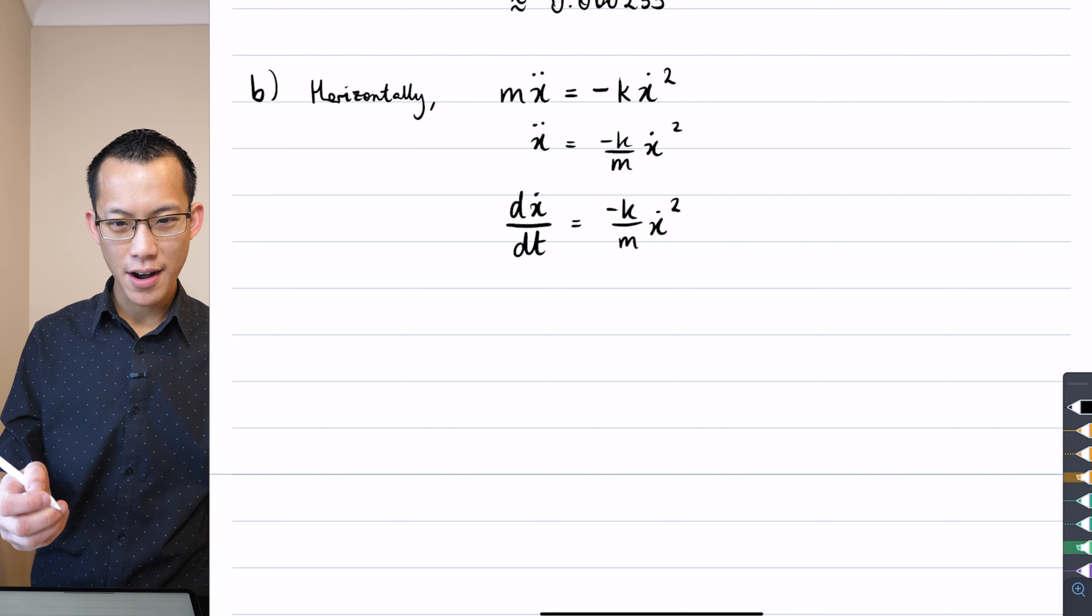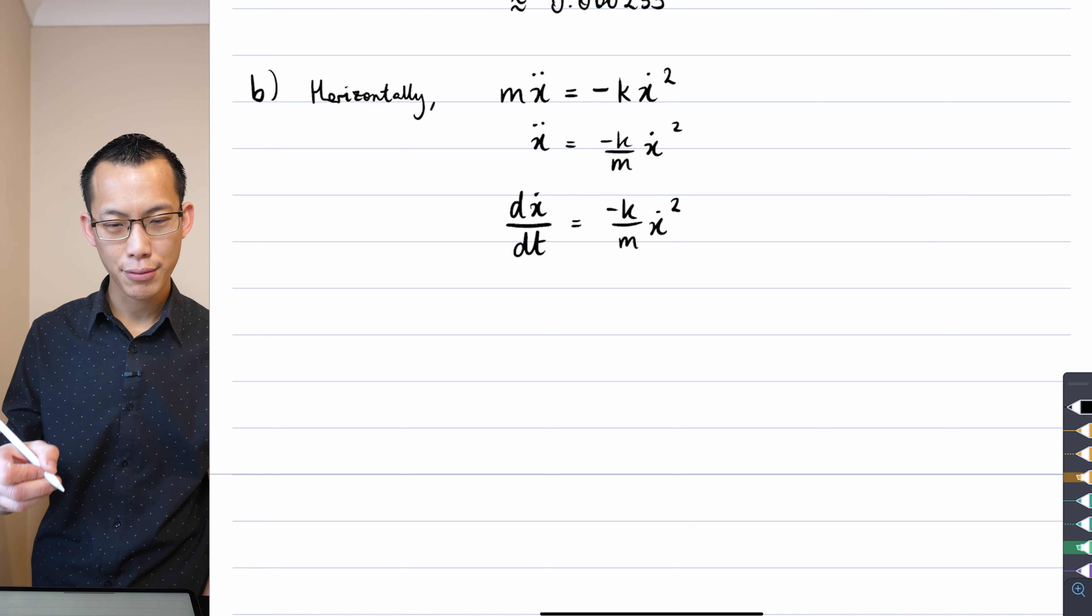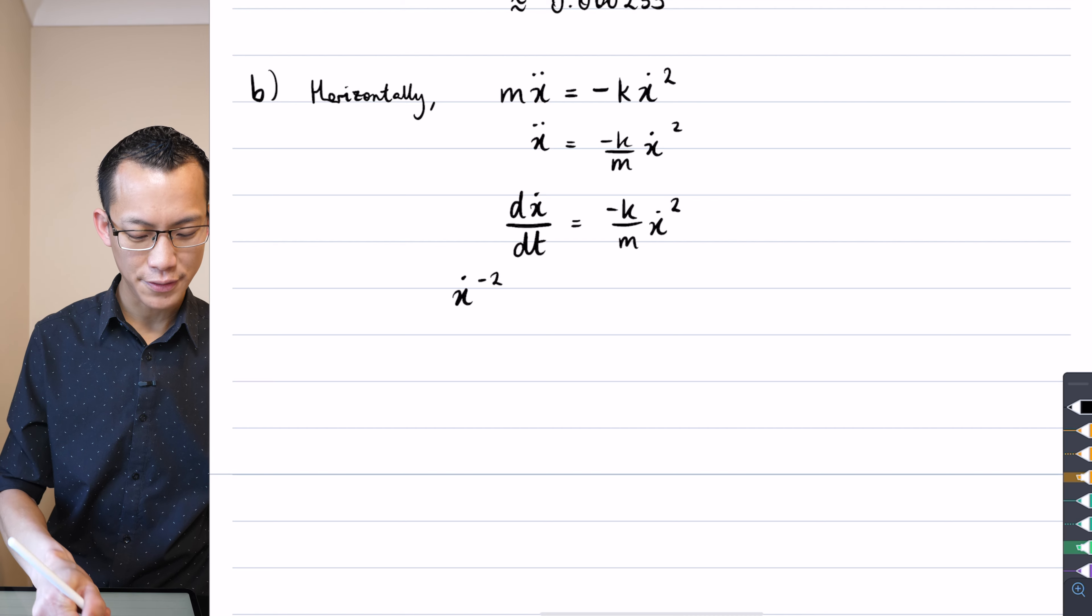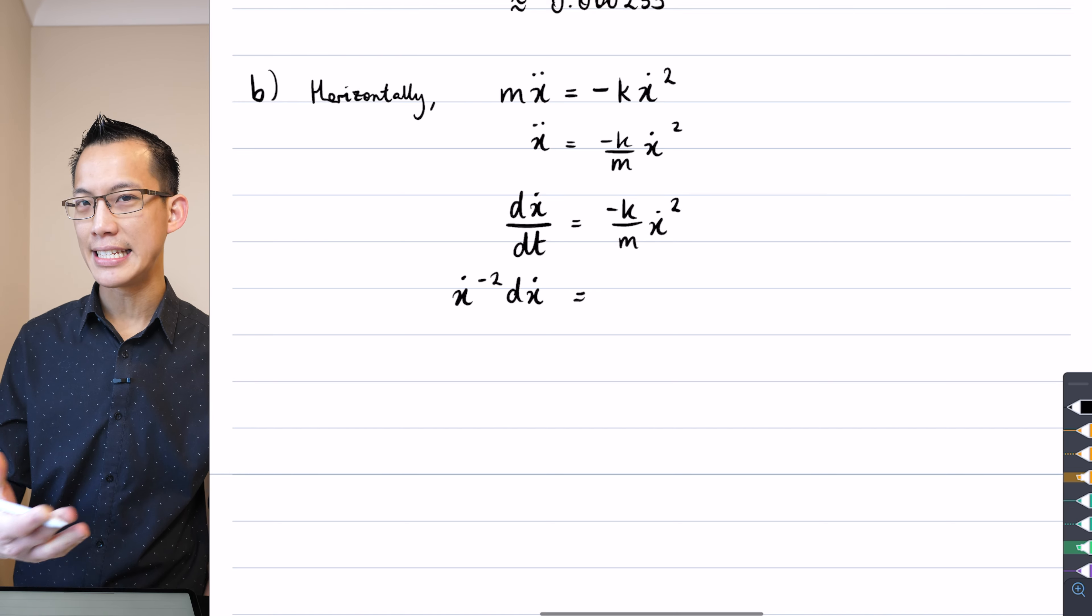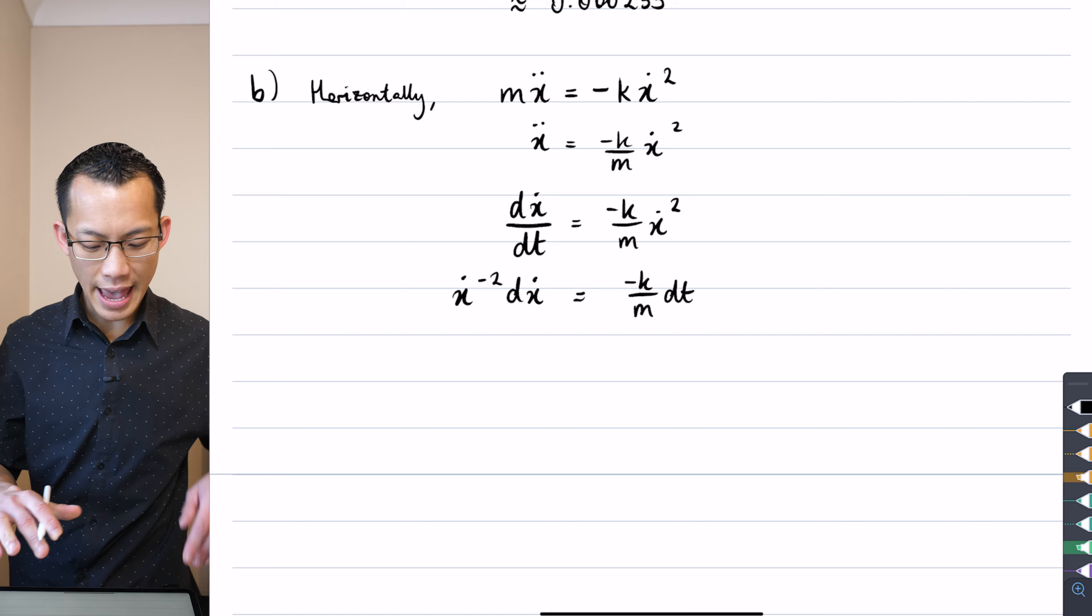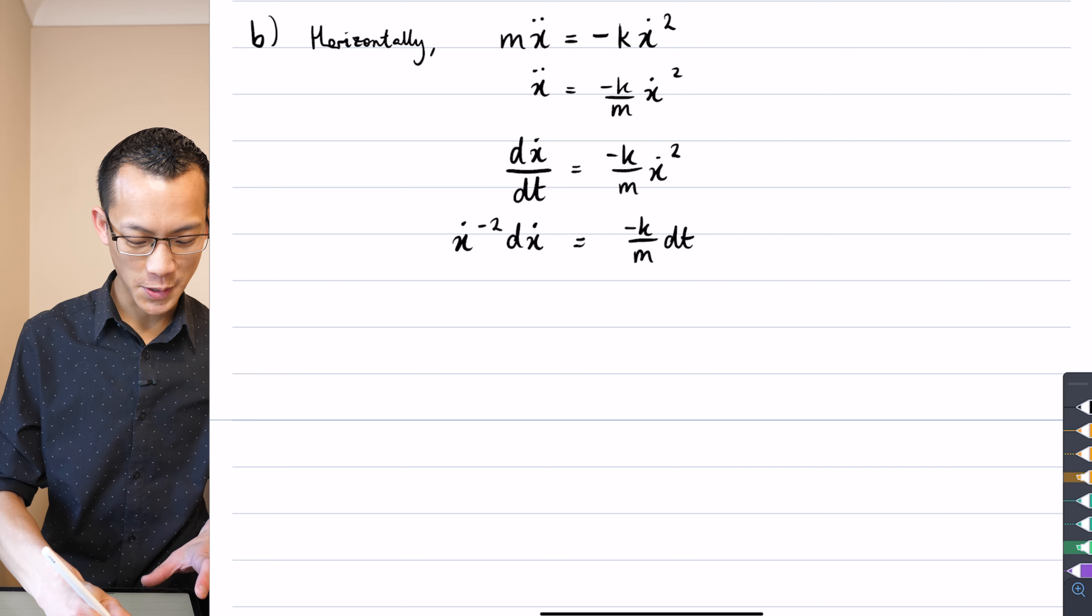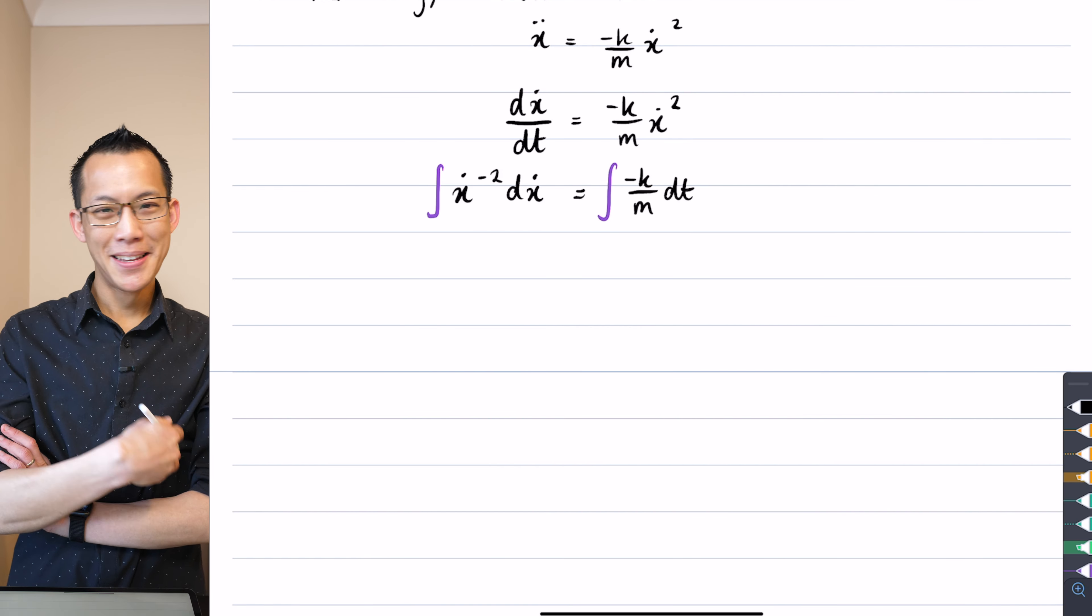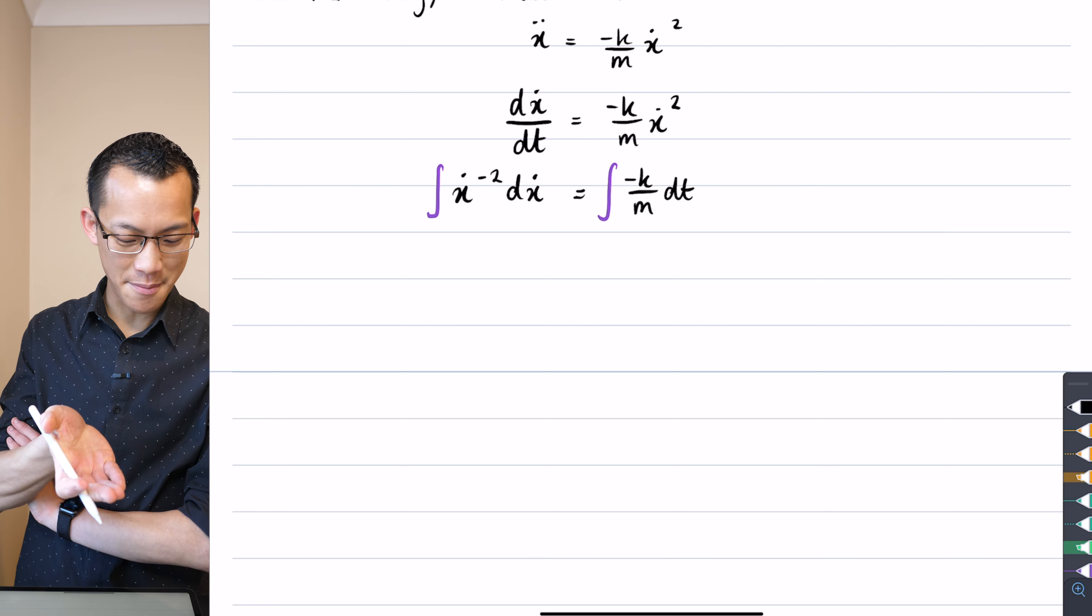So I'm going to do my separation of variables and see what I end up with. When I put over all of the, I've got this dx dot term over here, so I'm going to divide through by x dot squared. So that will give me x dot to the power of negative two, do you agree with that, just index laws there. I'll leave the dx dot there on that side, and I'm going to kick the dt over to the other side, so that gives me minus k over m dt. And at this point here I'm sort of ready to go, so I can integrate from here. So I'm going to be so lazy on the next line, all I need to do is add integral signs.